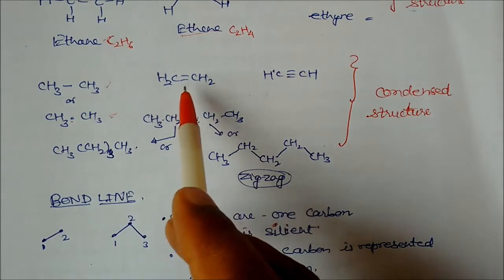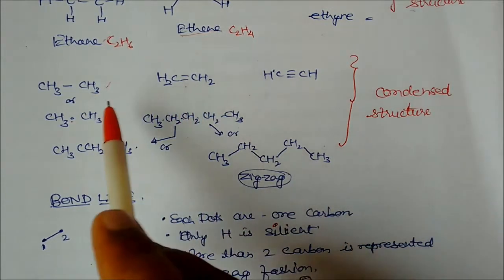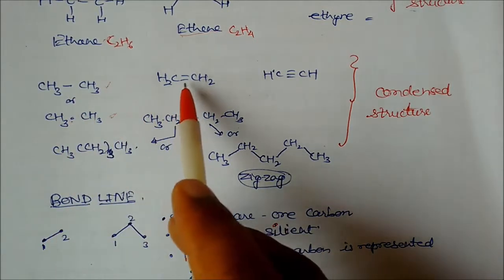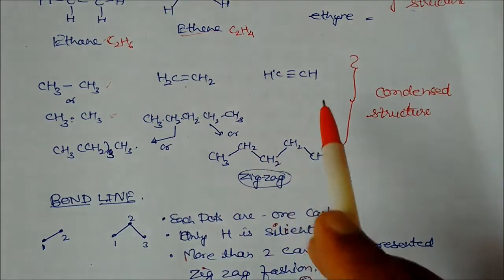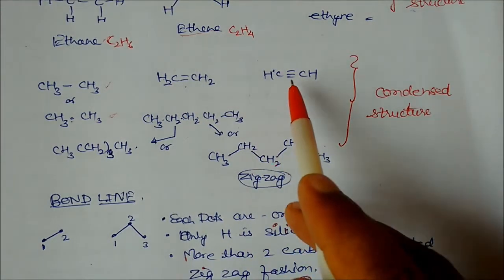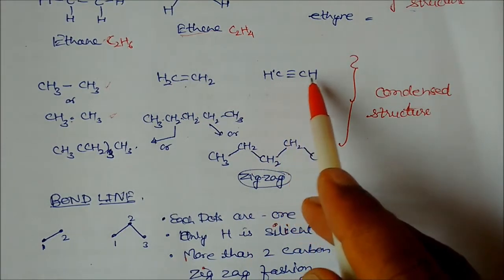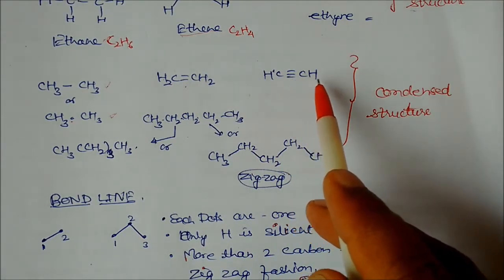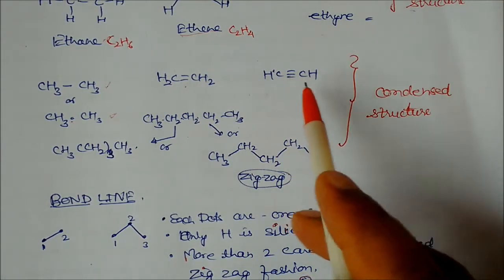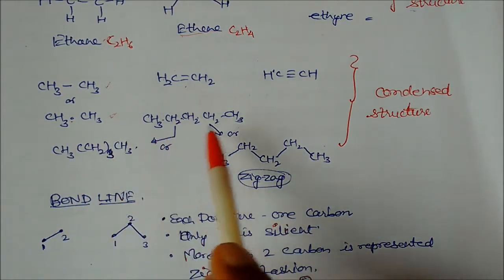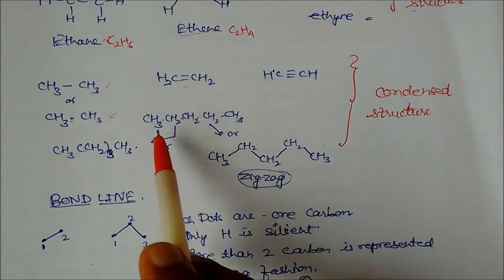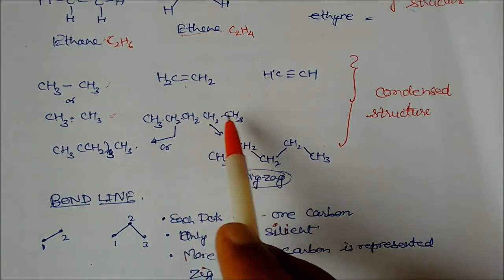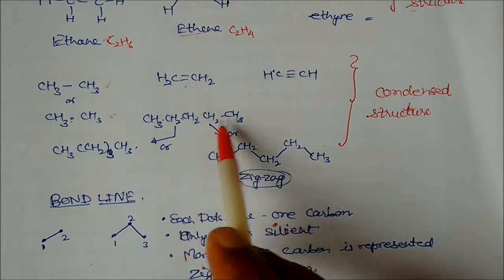For a single bond you can omit it, but for a double bond you keep it shown as a double bond, and for a triple bond you keep the carbon-carbon triple bond while deleting the single bonds. So this is another form of the condensed structure.